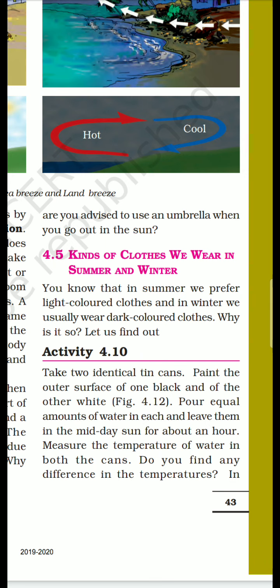Why are you advised to use an umbrella when you go out in the sun? Garmi mein aapko sun rays se bachne ke liye umbrella saath rakhne ki advice di jaati hai — kyunki umbrella pe se woh reflect ho jaaye, wapas chale jaaye. So the kind of clothes we wear in summer and winter — hum summer aur winter mein jo different type ke clothes pahnte hain, woh bhi radiation pe hi depend karta hai. In summer we prefer light colors — white color ke kapde zyada pahanna pasand karte hain. But in winter we wear dark clothes like blue, black.